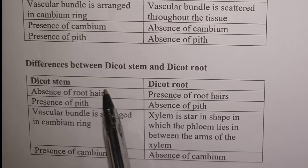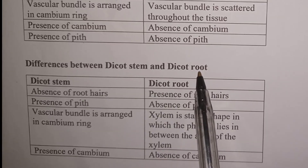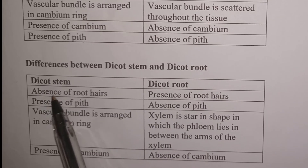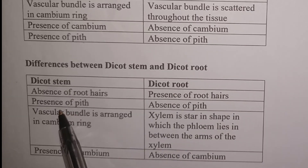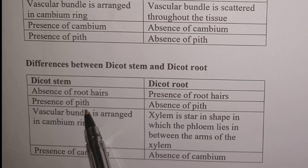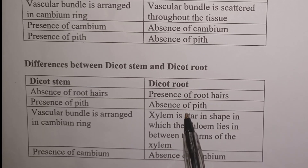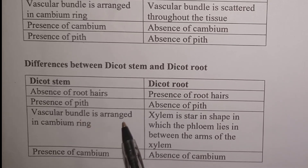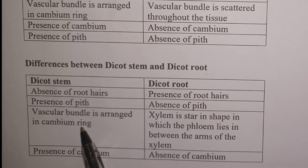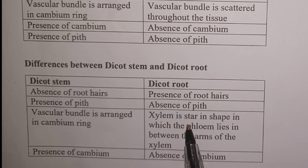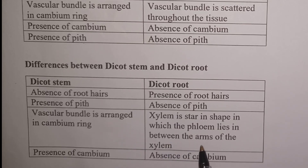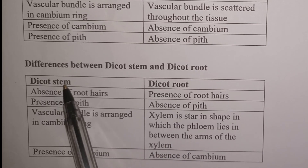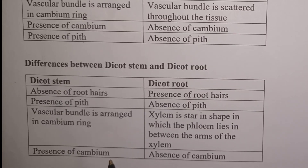Differences between dicot stem and dicot root: in dicot stem there is absence of root hairs, while in dicot root there is presence of root hairs. In dicot stem there is presence of pith, while in dicot root there is absence of pith. In dicot stem the vascular bundle is arranged in a ring, while in dicot root the xylem is star-shaped and the phloem is found between the arms of the xylem. In dicot stem there is presence of cambium responsible for secondary growth, while in dicot root there is absence of cambium.